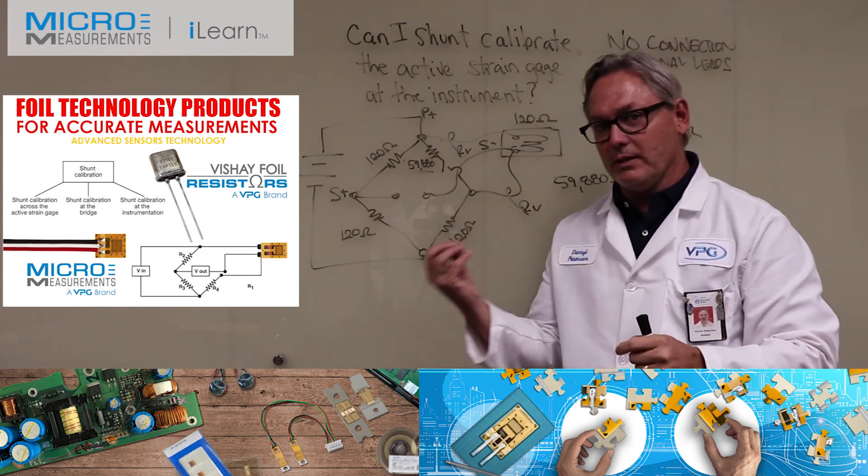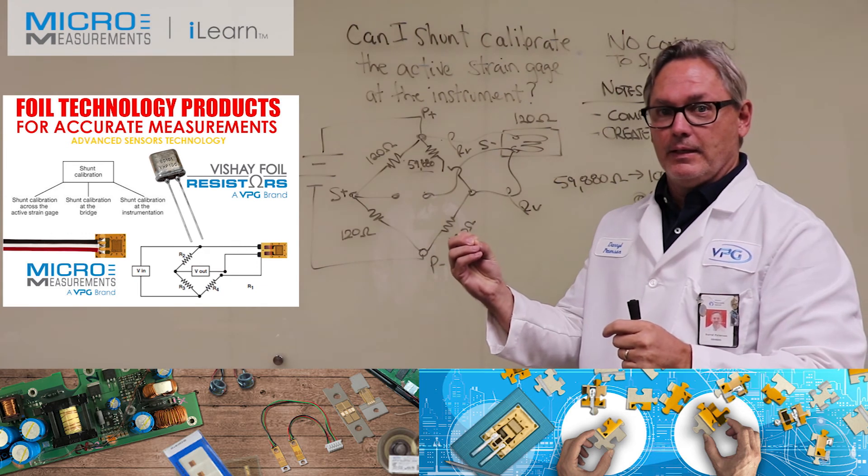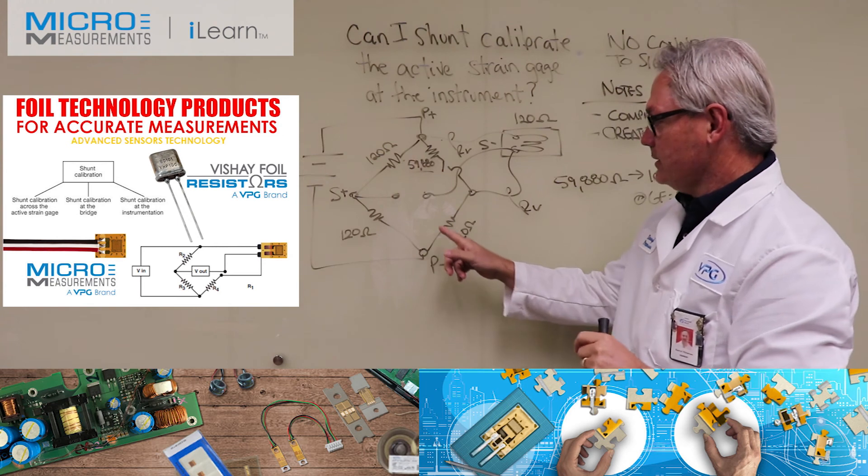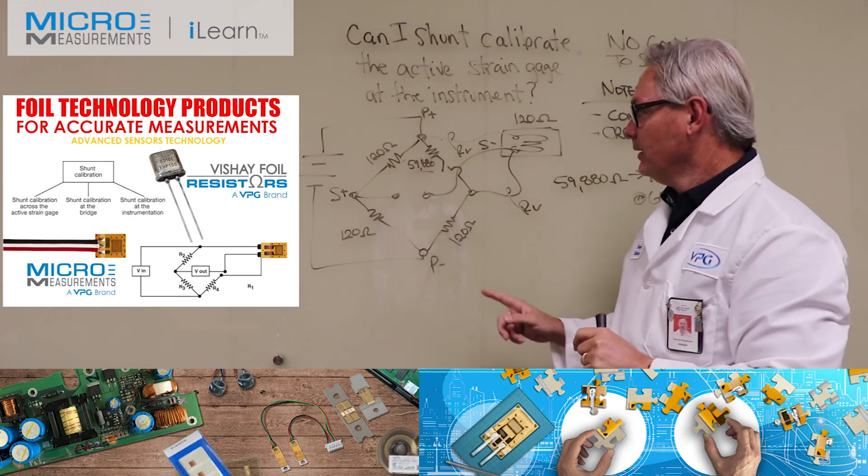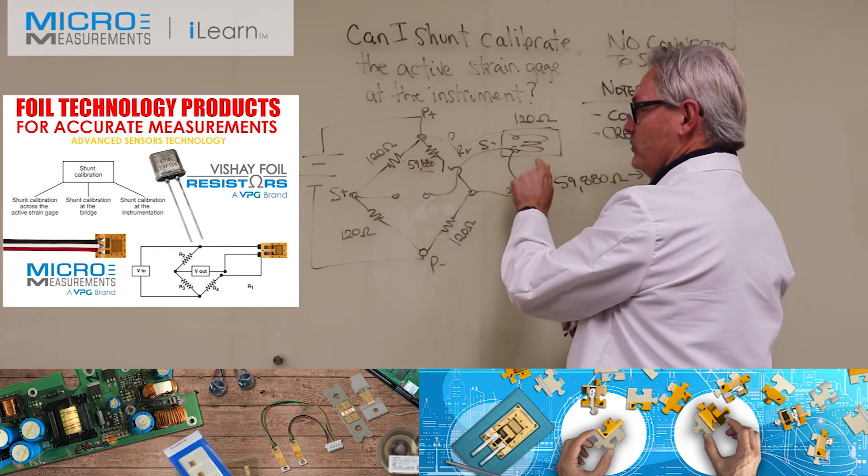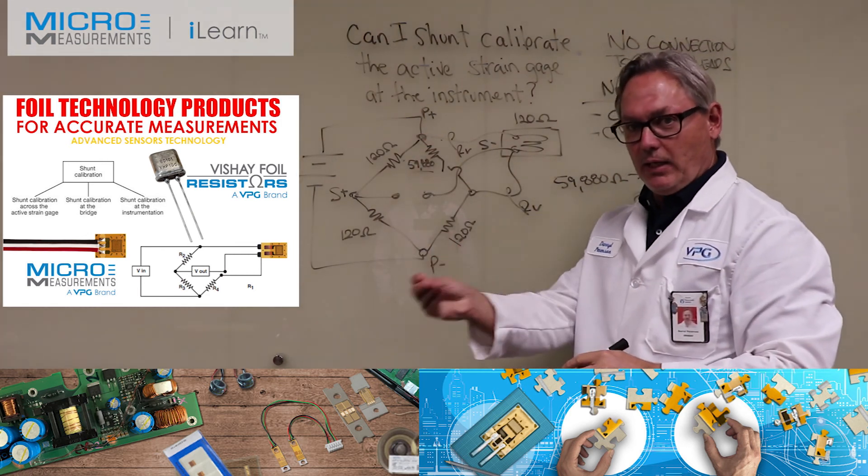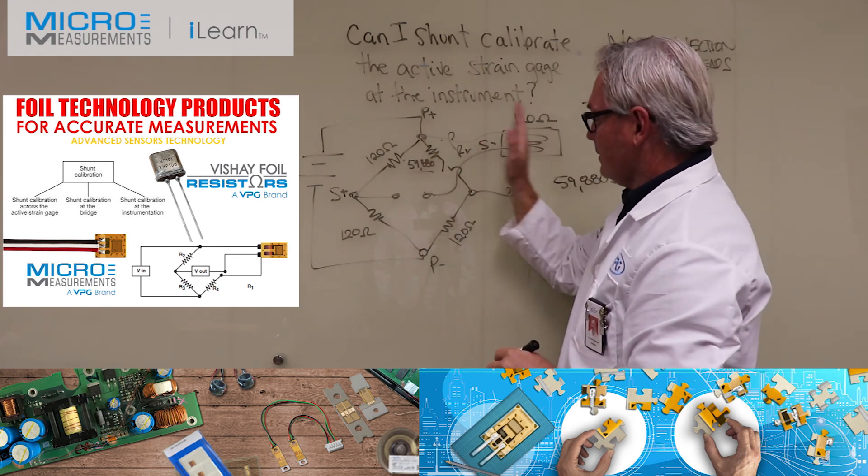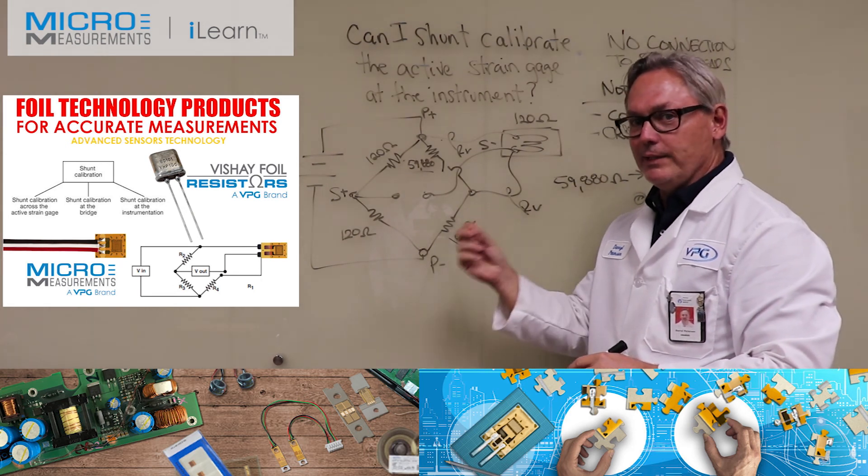Depending on what that value is, that will throw off your calibration. If you remember from the previous videos, one of the things we like to do is calibrate across a very precise resistor. In general, your lead wires are not going to be anywhere near as precise as these 0.01% bridge completion resistors. So if you knew the resistor values of R_cable and you took that into account when you're calculating this parallel resistance, then maybe you can calibrate the strain gauge.